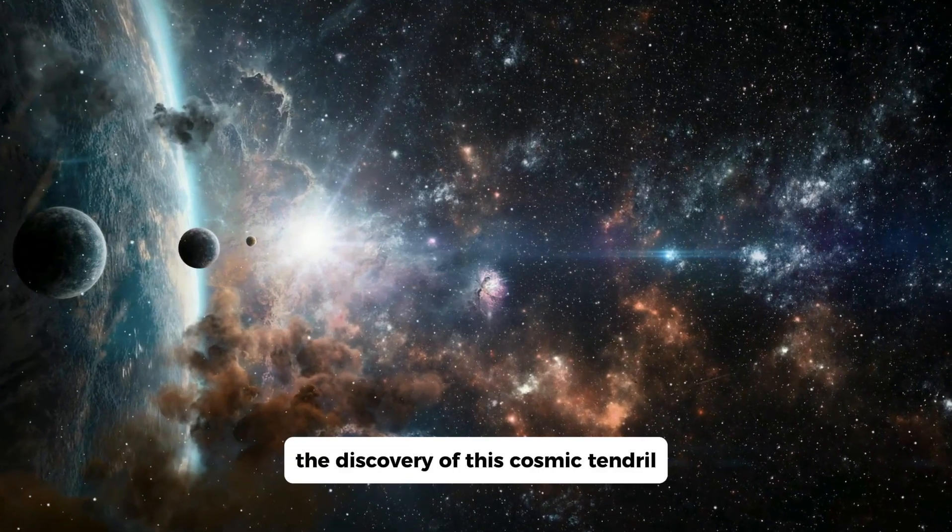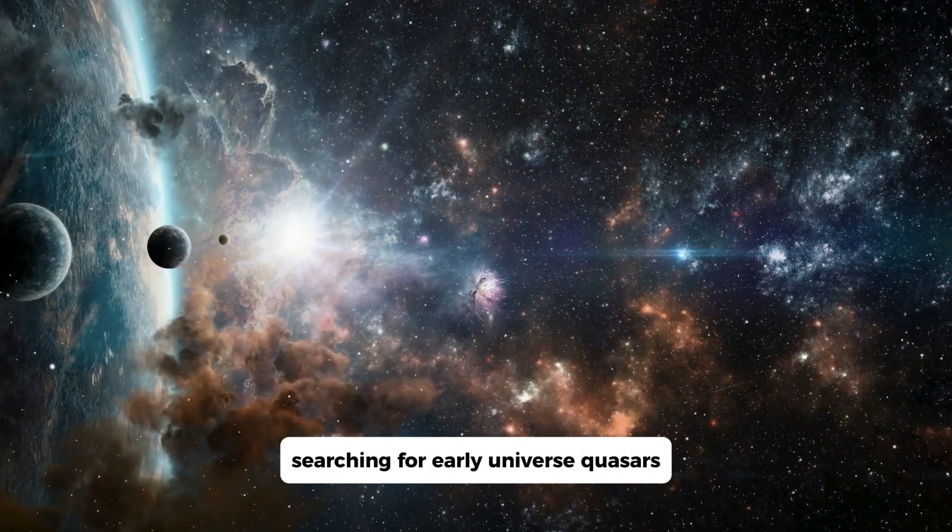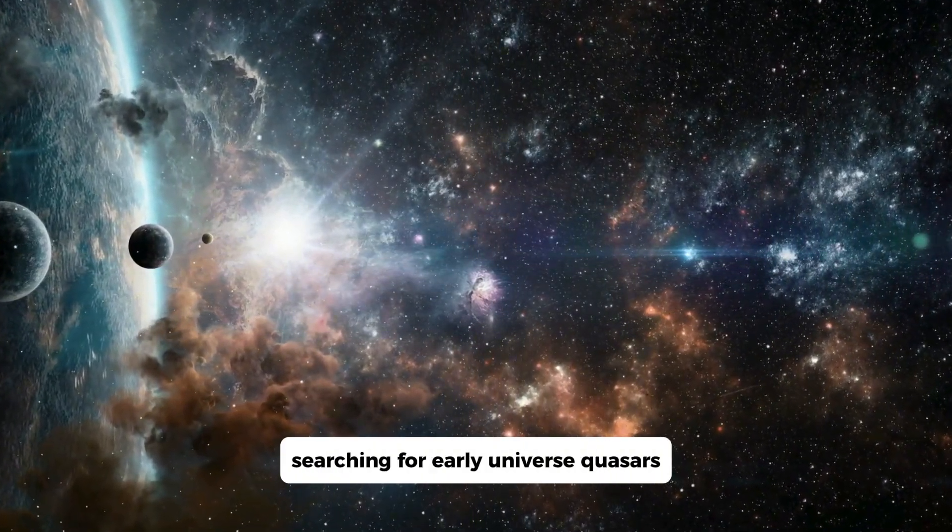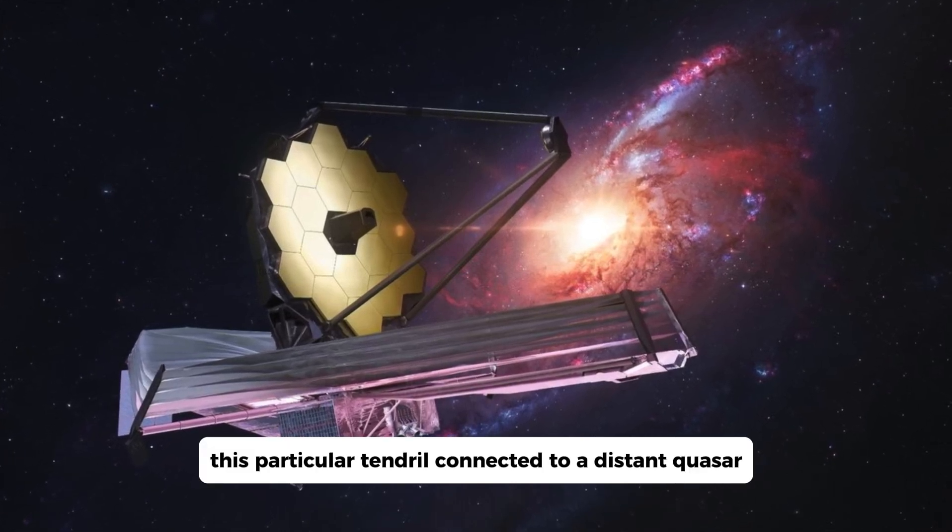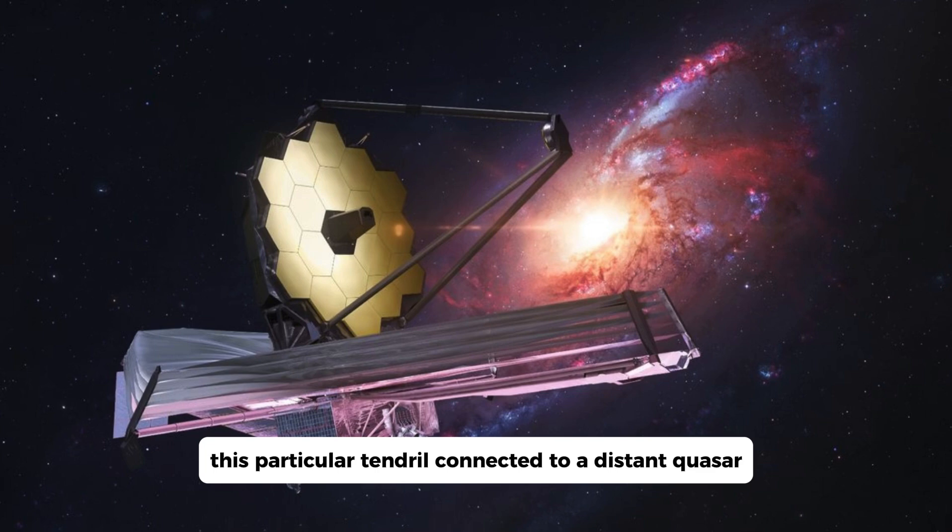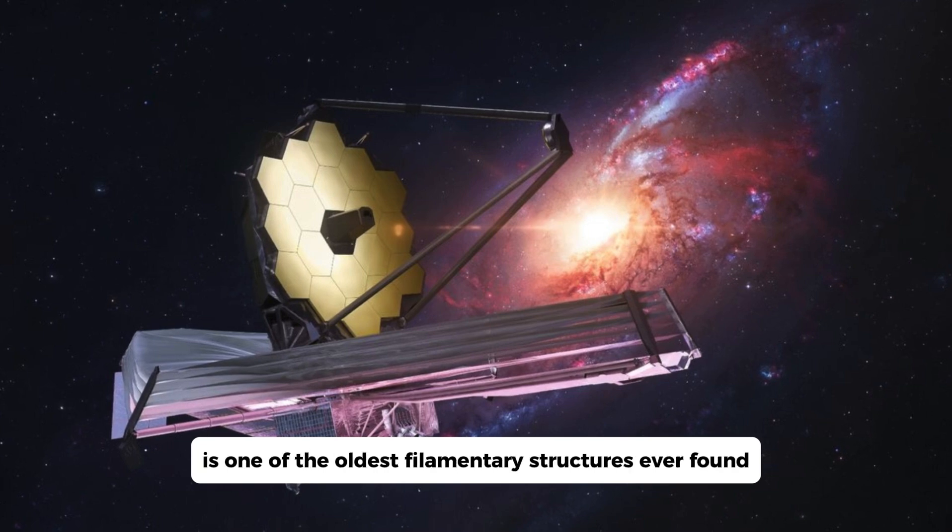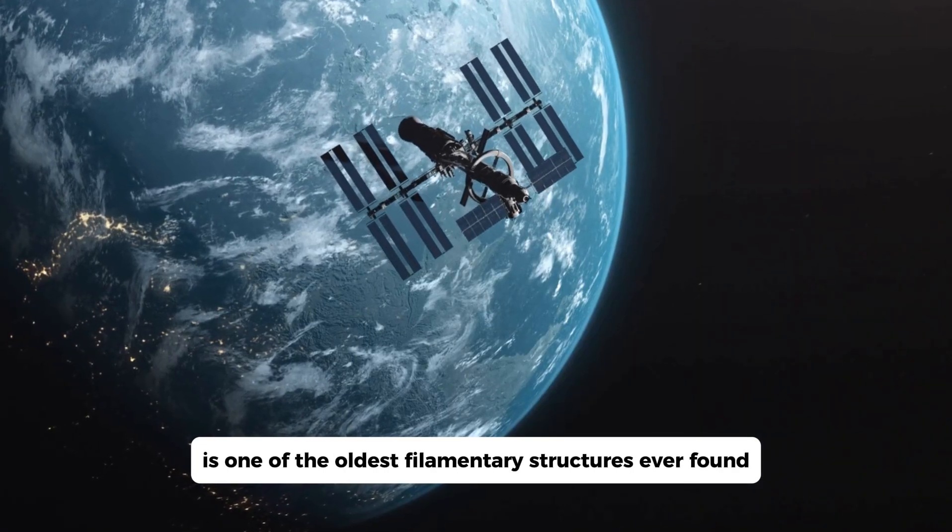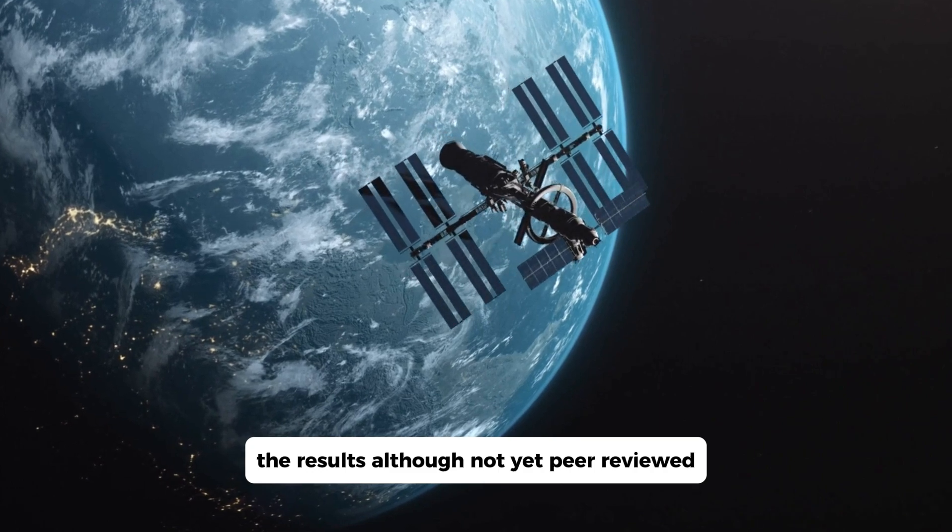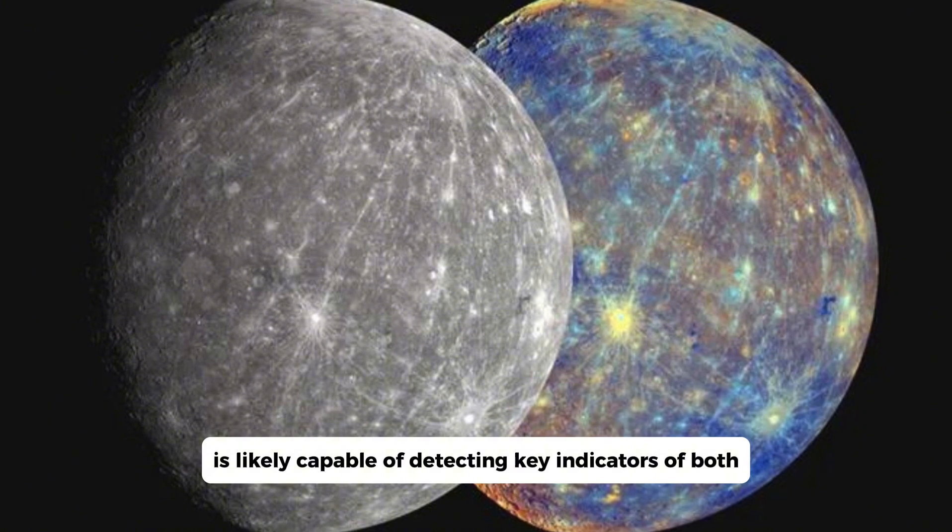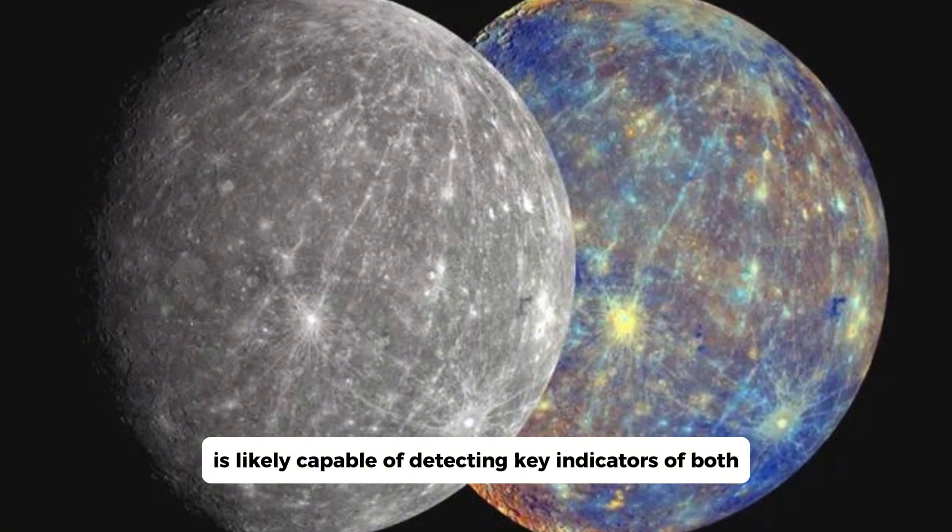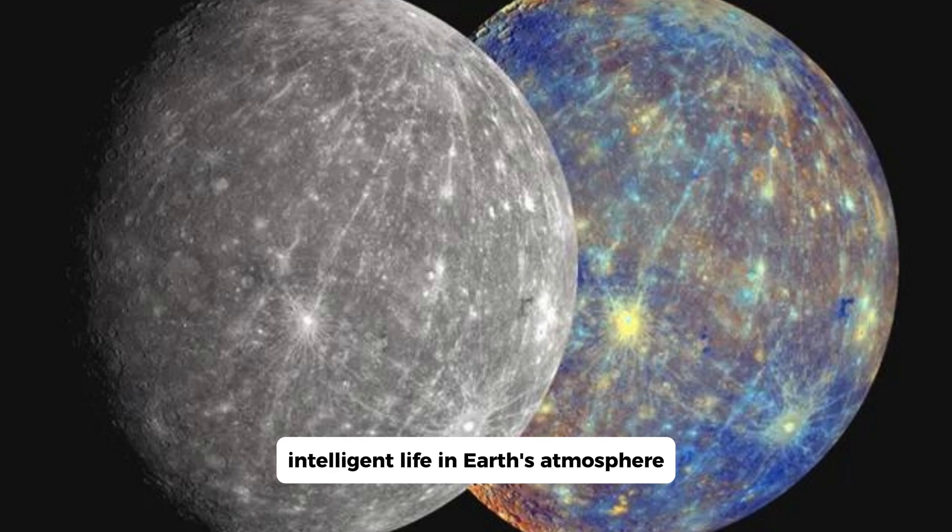The discovery of this cosmic tendril was initiated by scientists searching for early universe quasars with the aim of identifying 25 of them. This particular tendril, connected to a distant quasar, is one of the oldest filamentary structures ever found. The results, although not yet peer-reviewed, suggest that JWST is likely capable of detecting key indicators of both intelligent and non-intelligent life in Earth's atmosphere.